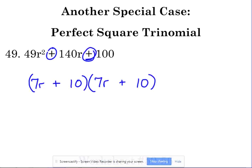This is what is special about a perfect square trinomial. You end up with the exact same factor in both sets of parentheses. Here's where the 140 comes from. The outside gives us 70r and the inside gives us 70r. So 70 plus 70 is 140.